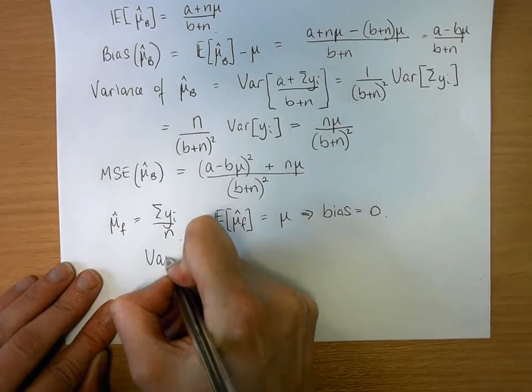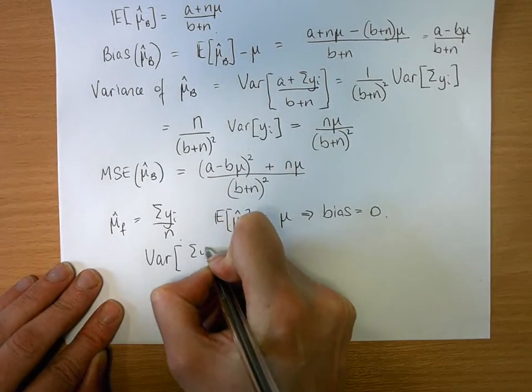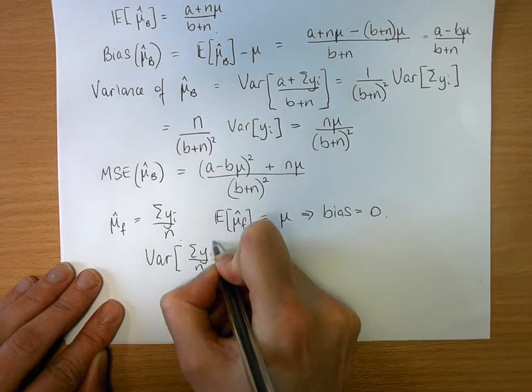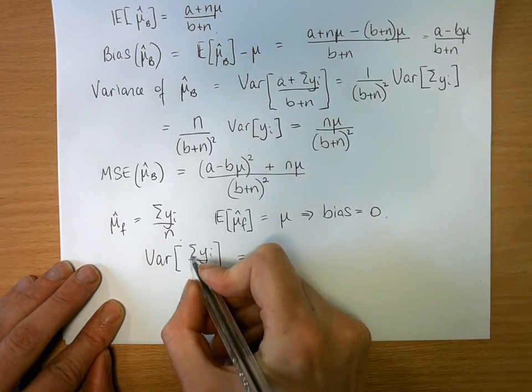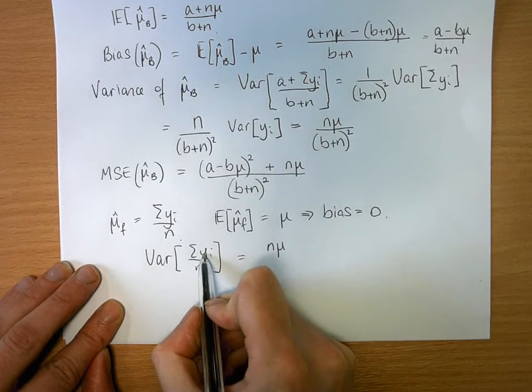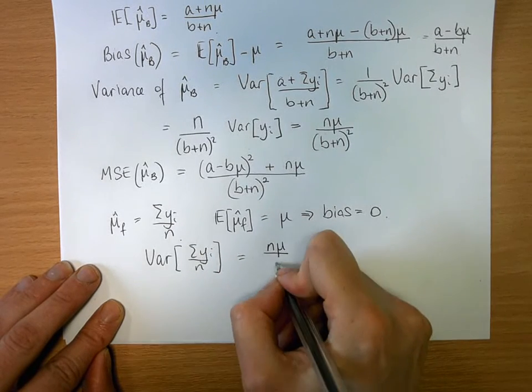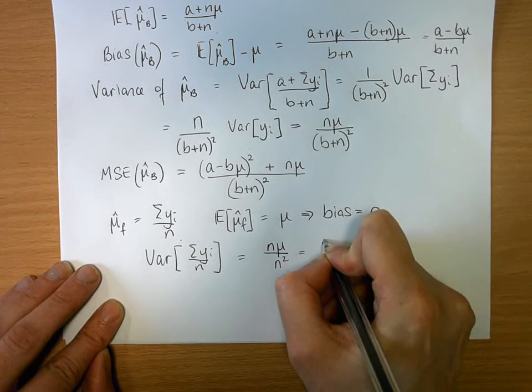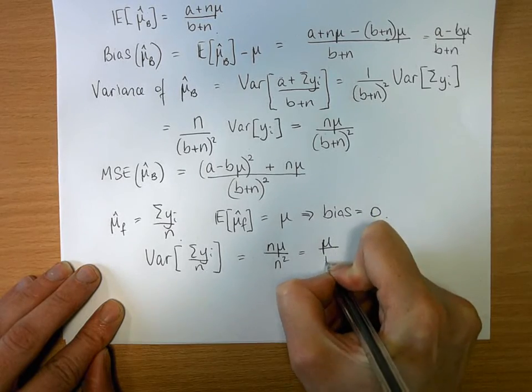The variance of the sum from y over n is equal to n mu. You've entered those and each of them have mu. Divided by n squared is equal to mu divided by n.